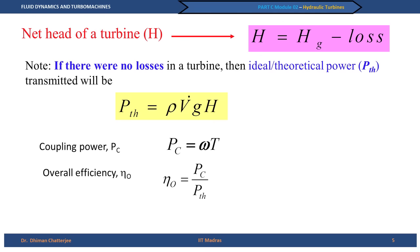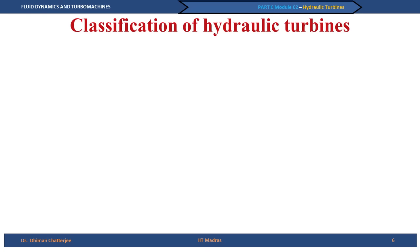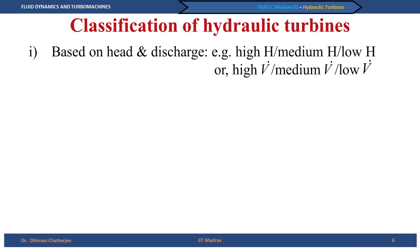When we come to turbines, we can classify them in different ways. Based on head and discharge, qualitatively we can say high head, medium head, low head — or alternatively high, medium, or low volume flow rate. The problem with this classification is that 'high' and 'low' are not well-defined, so we need to use another approach.